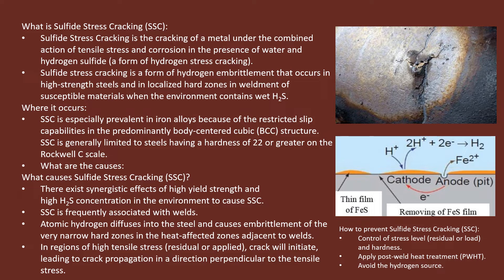There exist synergistic effects of high yield strength and high H₂S concentration in the environment. There should be a high yield strength material combined with the presence of H₂S concentration. It is generally associated with welds, because when there is a heat affected zone combined with this kind of strength and this kind of H₂S concentration, these three conditions together will cause sulfide stress cracking. Atomic hydrogen diffuses into the steel and causes embrittlement.